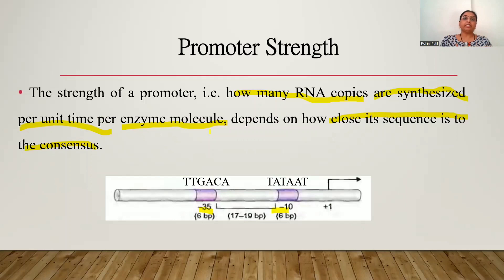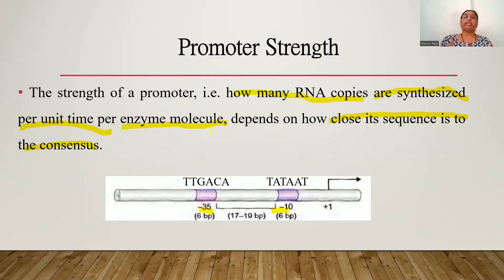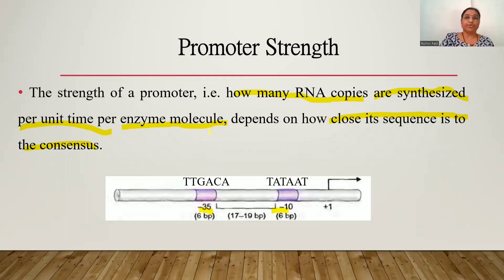So the promoter strength is going to affect the efficiency of transcription. If the consensus sequences of the promoter are present, the promoter will be a strong promoter and will allow high efficiency of transcription. If there is any diversion from these consensus sequences, the efficiency of transcription will be affected and such promoters will be weak promoters.